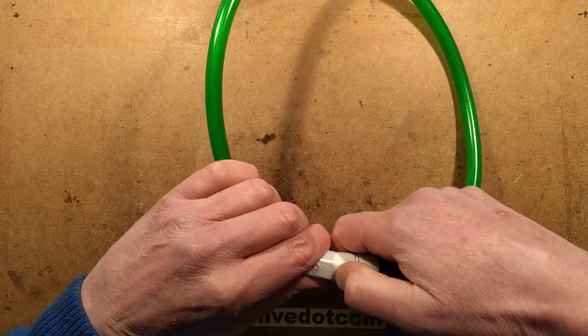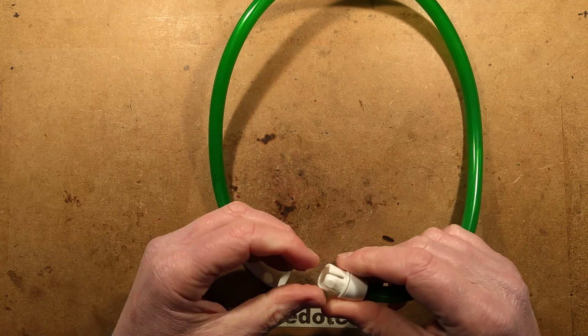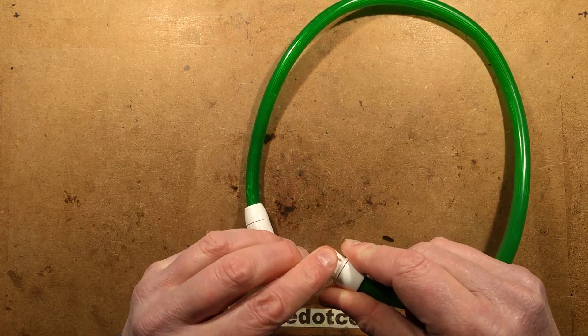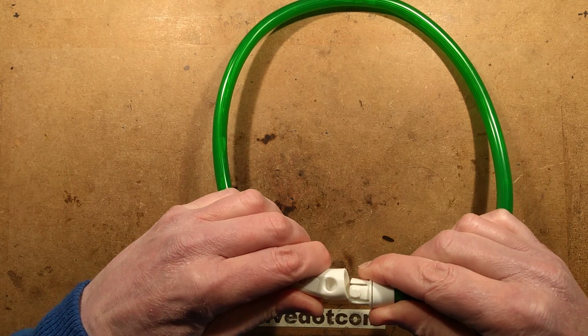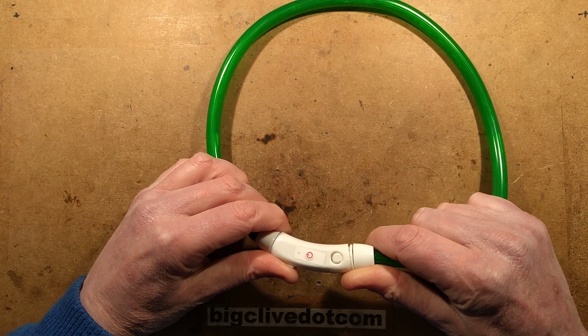To put it on the dog, you press this little button in and it releases it. It pulls out the end. I found that was super stiff initially. I've pared it away with a knife to try and make it come out easier, but you don't want it to come off accidentally.